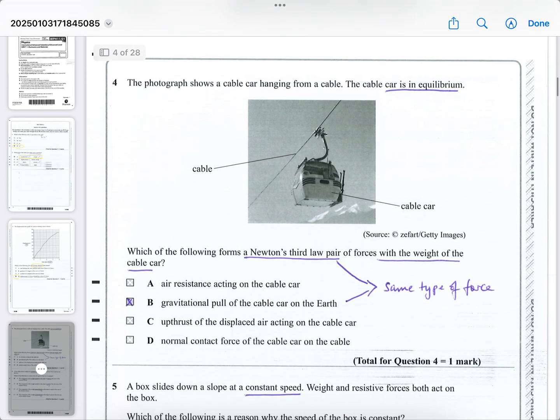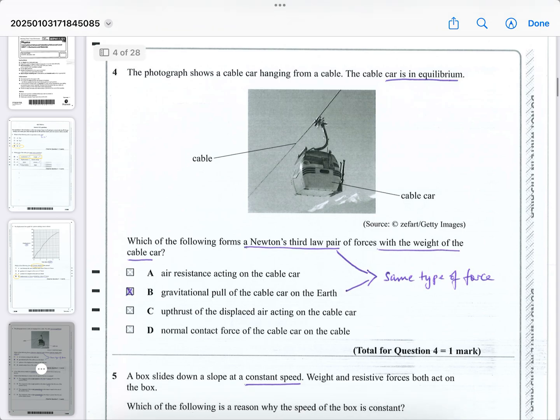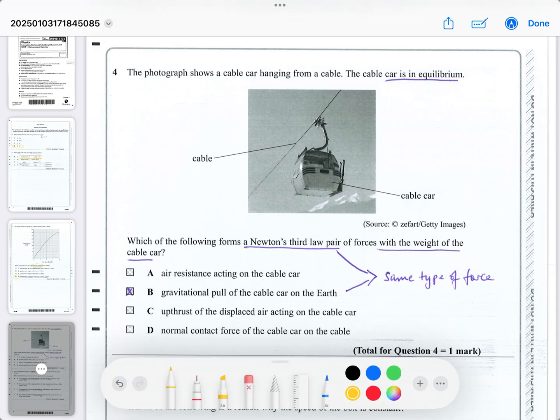The next question is about a cable car hanging from a cable. The car is in equilibrium. So why did they tell you that? Well, it must mean that the forces on it are balanced. It says, which of the following form a Newton's Third Law pair of forces with the weight?